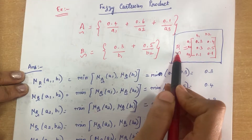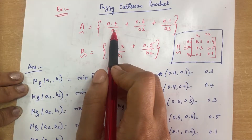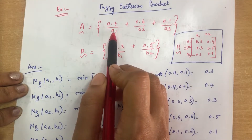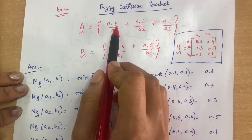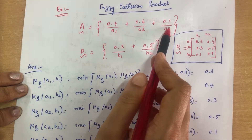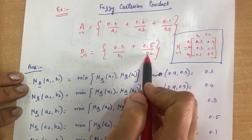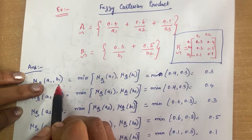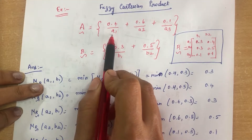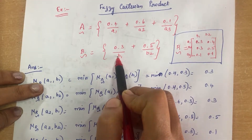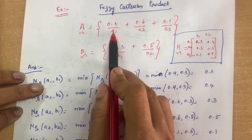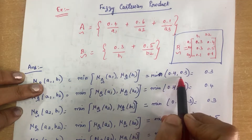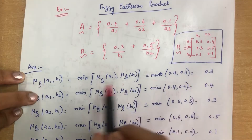To find the fuzzy Cartesian product, we compare membership values between all pairs: a1 & b1, a1 & b2, a2 & b1, a2 & b2, a3 & b1, and a3 & b2. For a1 and b1: minimum of 0.4 and 0.3 = 0.3. For a1 and b2: minimum of 0.4 and 0.5 = 0.4.